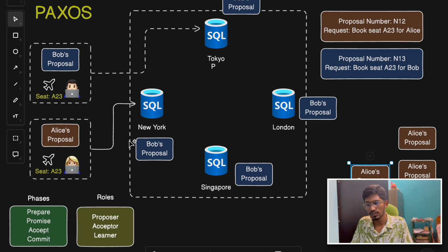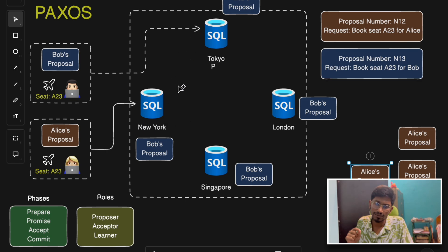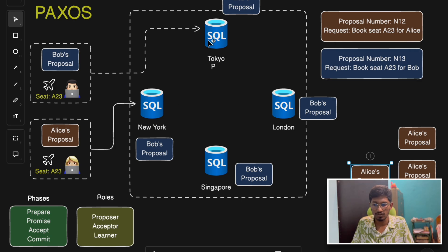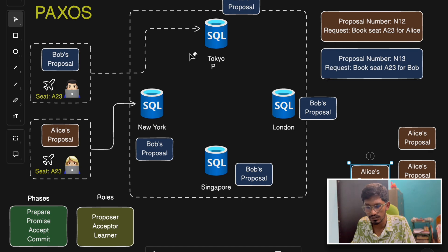Once the final accept phase completes, all acceptor nodes accept Bob's proposal: seat A23 is booked for Bob. This final decision is logged in the database. Even if LS retries later, the system already has a record that seat A23 is booked. Once the final decision is locked, all acceptors inform every database node — every replica learns that A23 is taken. Each database node can act as a proposer, acceptor, and learner.